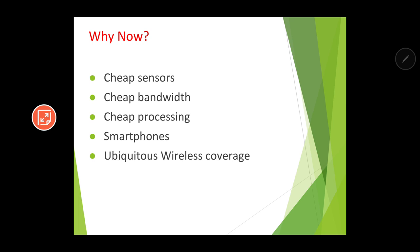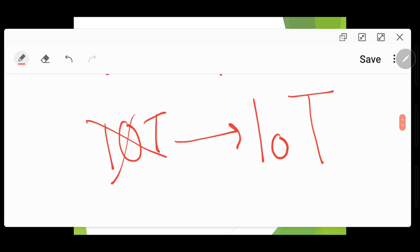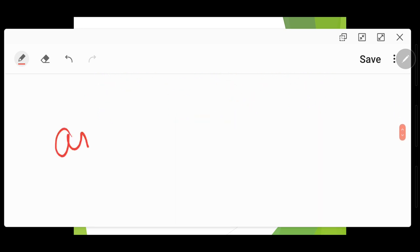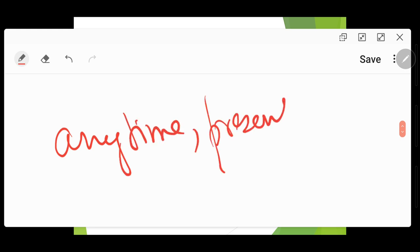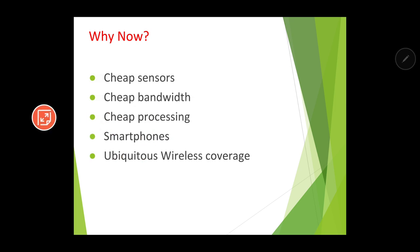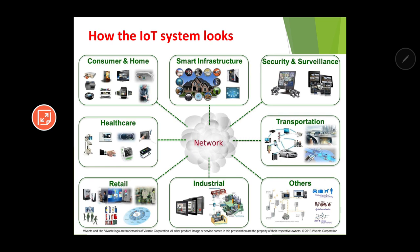The fourth reason is ubiquitous wireless coverage. The word 'ubiquitous' means present anytime, anywhere. The internet is now present everywhere, at almost all parts of the globe, and with this wide coverage of internet, IoT applications have also reached their present popularity.